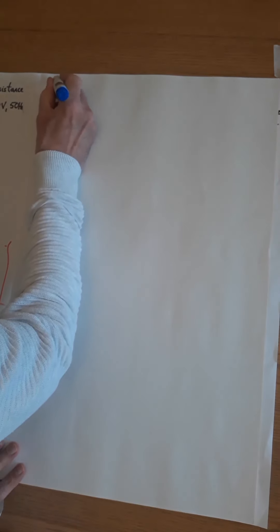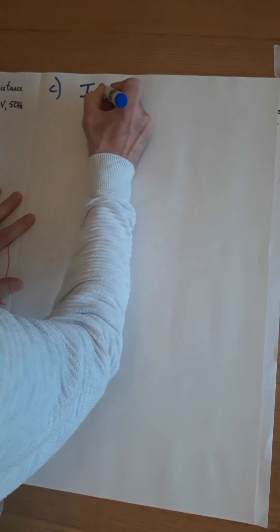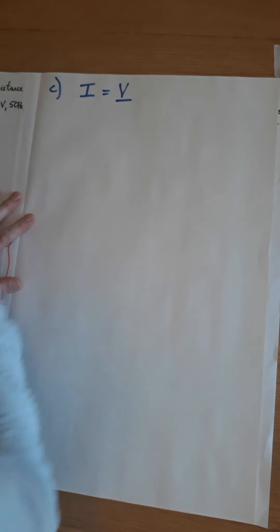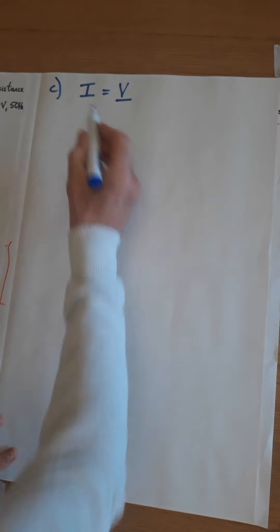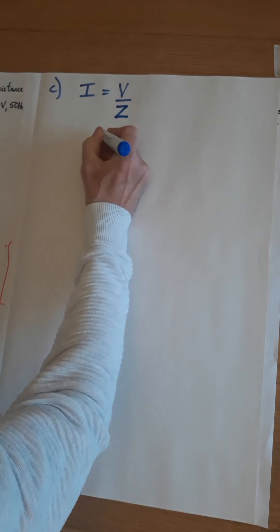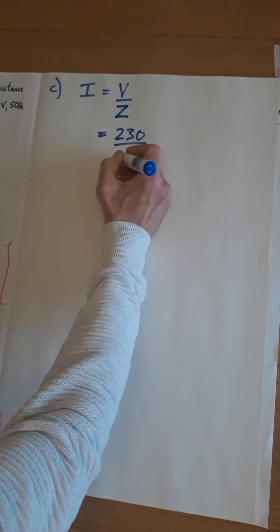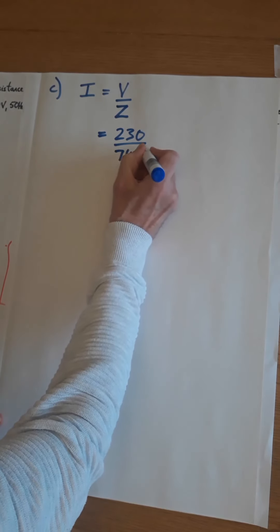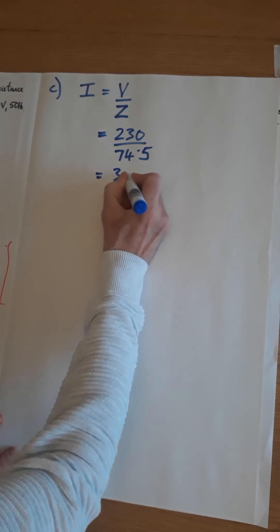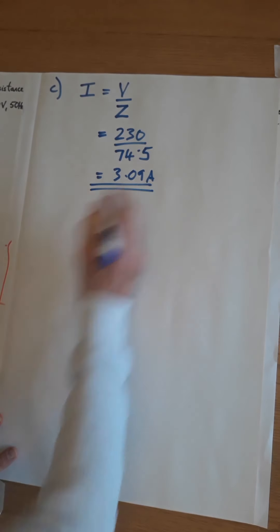So part C is to calculate the circuit current. This is again Ohm's law, but you're going to have to think very slightly differently. I equals V over R. The opposition to current flow in the circuit we're talking about is impedance, so I equals V over Z. And if we put the numbers in: 230 over 74.5, and that comes to 3.09 amps.